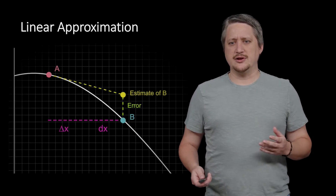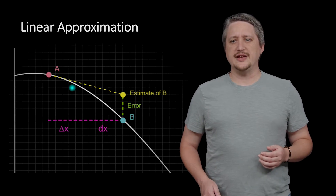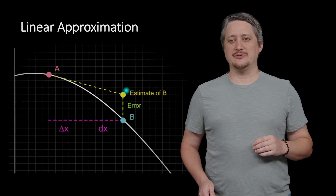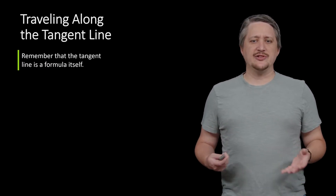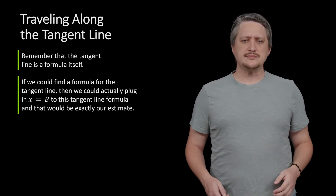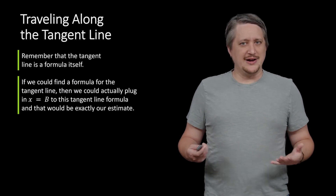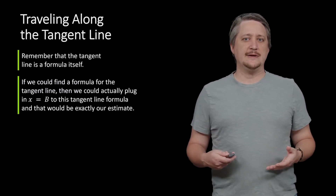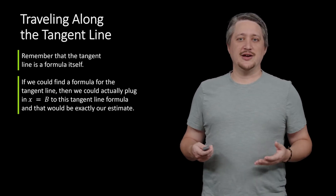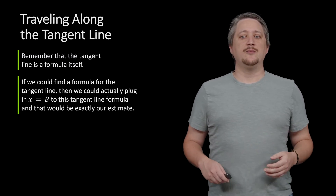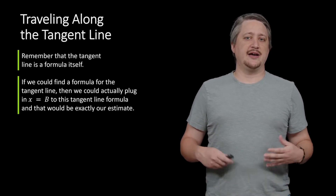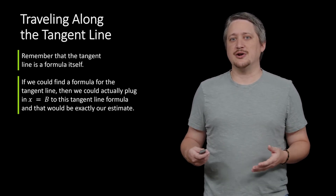The whole point here is that we're using this tangent line — not the whole tangent line, just going from A to where x is B, even though it's not quite the right spot. And remember that tangent lines are formulas. We've already done a whole section about finding tangent lines to a point on a curve. So if we found the formula for the tangent line at x equals 9, we could then plug in the hard-to-find point — x equals B, or in our case 10 — and that would literally give us the linear approximation value.